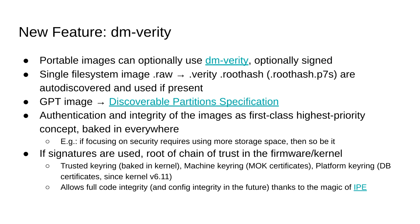That's the history. Now for new features since they were introduced. Signed DM Verity — this is the most important one for me. Portable images can optionally use signed DM Verity. So if you have a single file image — like a SquashFS directory — then if you also deploy .verity, .roothash, and .roothashP7 files — we call them sidecar files — they are auto-discovered and used if present.